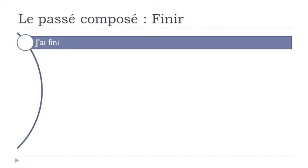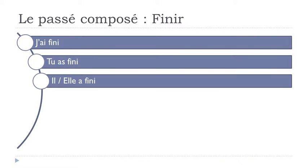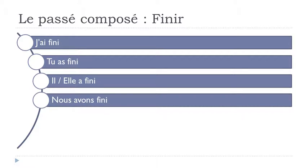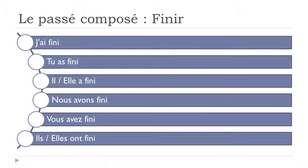J'ai fini. Tu as fini. Il a fini. Féminine forme: Elle a fini. Nous avons fini. Vous avez fini. Ils ont fini. Elles ont fini.